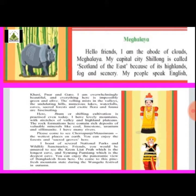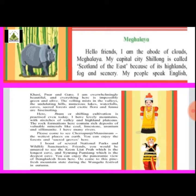'Hello friends, I am the abode of clouds.' Meghalaya is situated in a mountainous region where you can see lots of clouds, that's why it's called the abode of clouds. The capital city Shillong is called the 'Scotland of the East' because of its highlands, fog, and scenery. The people speak English, Khasi, Pnar, and Garo.